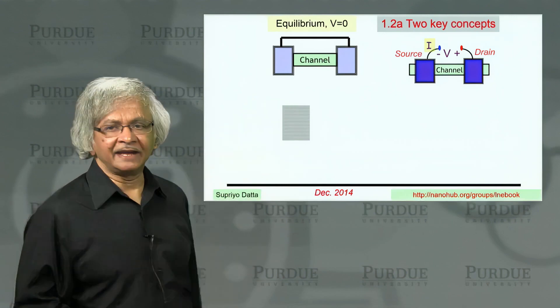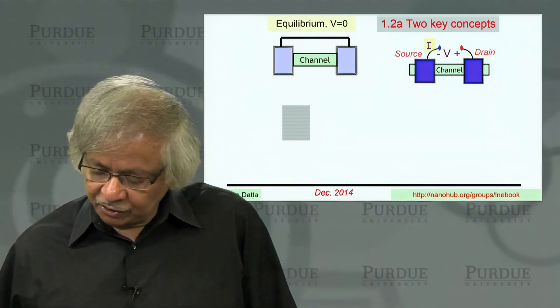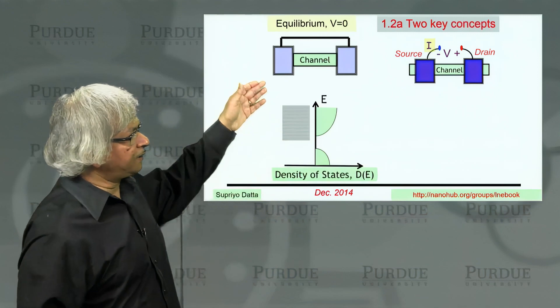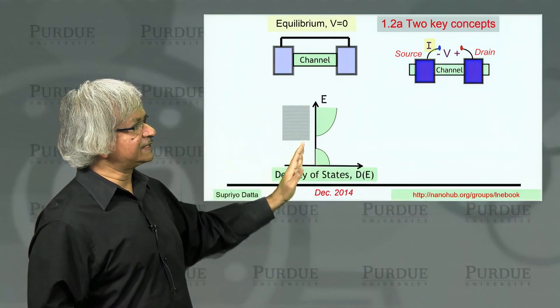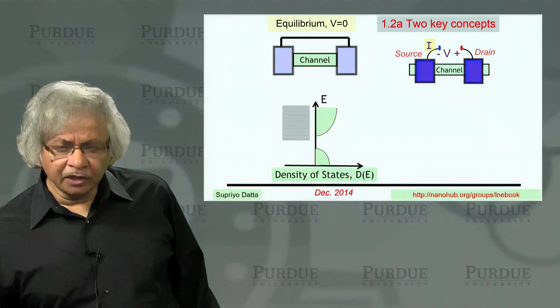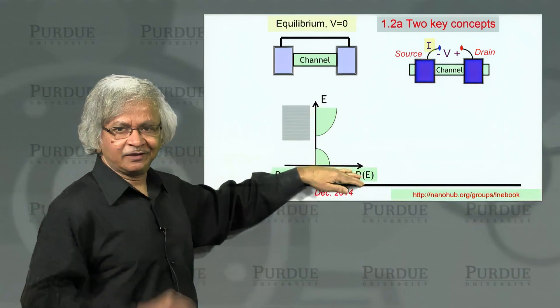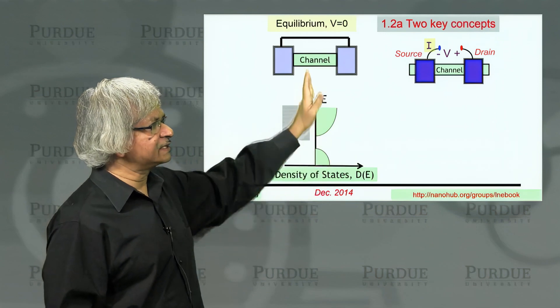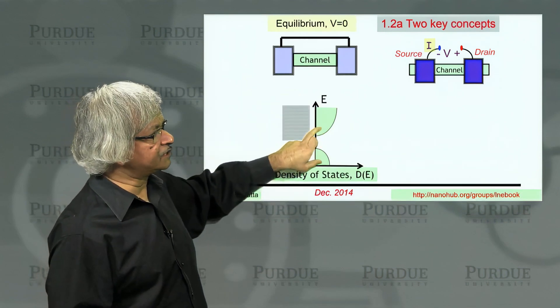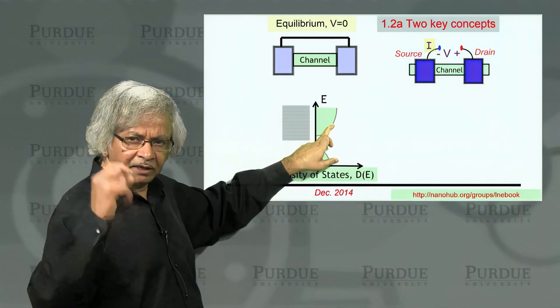Rather than draw lots of lines, it's more convenient to define something called the density of states, which tells you how many states you have per unit energy. A typical density of states plot might look something like this. This axis is energy. This takes a little getting used to because usually you plot the independent variable horizontally, but here it's convenient to draw the energy axis vertically because that's the way we draw the energy levels. What the density of states tells me is how many of these energy levels I have per unit energy.